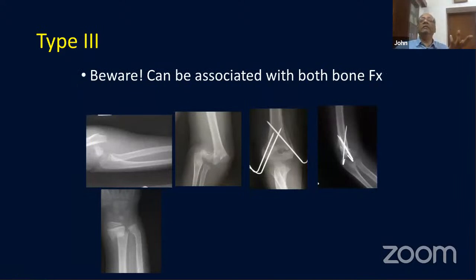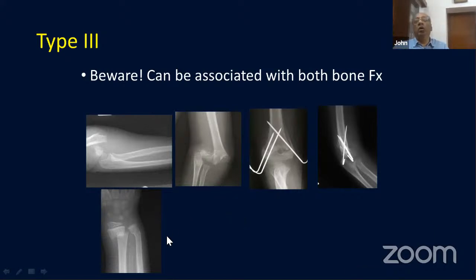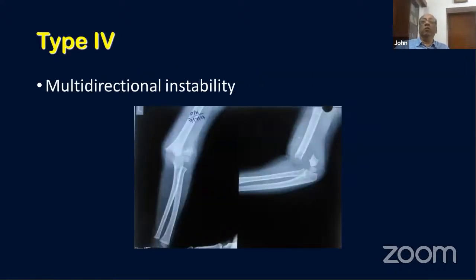Type 3 fractures are completely displaced. Watch out for any associated forearm or distal radius-ulna fractures, as these may change your management planning in terms of fixation. Always look out for any nerve or vessel injury or compartment syndrome as well.